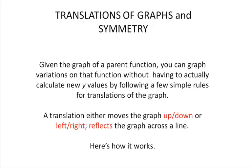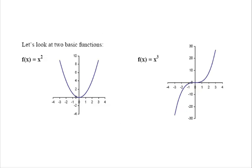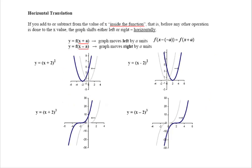Let's look at f of x equals x squared. That's our parent function for all parabolas. The vertex is at the origin, point 0, 0. It opens up. It is an even function because it is symmetric about the y-axis. The other function, f of x equals x cubed, is the parent cubic function. So let's look at horizontal translations of these two parent functions.